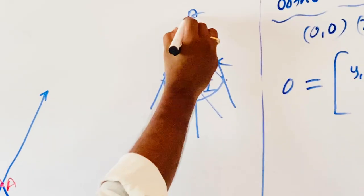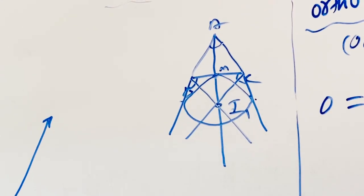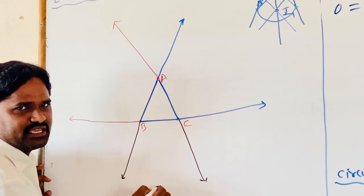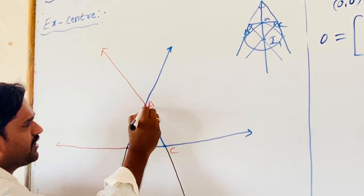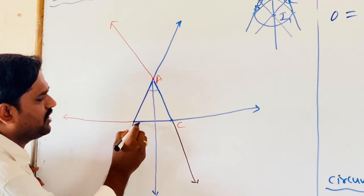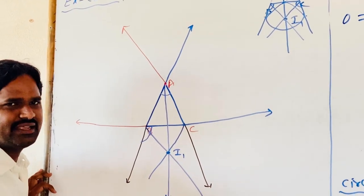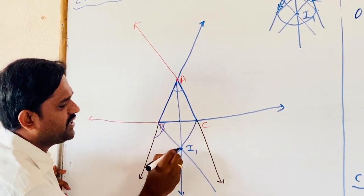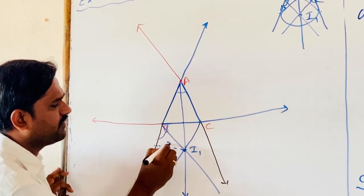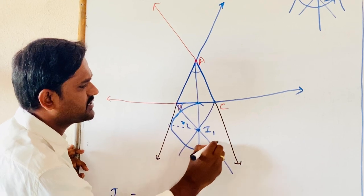Its center is I1, which is opposite to vertex A. Similarly, we can draw three ex-centers and three ex-circles for a triangle. For example, I am constructing an ex-circle opposite to vertex A. The angular bisector of A is internal, and the external angles B and C - the angular bisectors of B and C - their intersection is known as I1, the ex-center. By taking I1 as center and the equidistance from the three sides as ex-radius R1, by drawing a circle, it touches the three sides of the triangle.